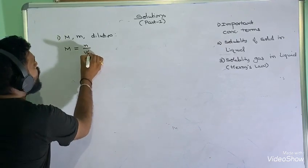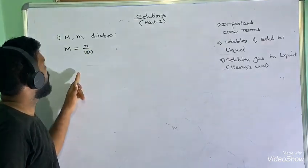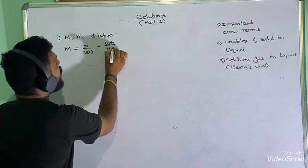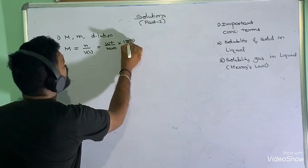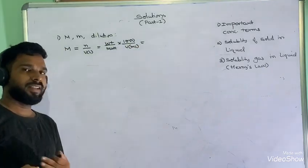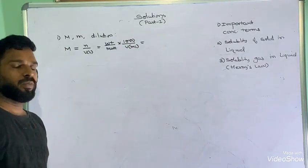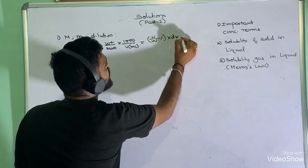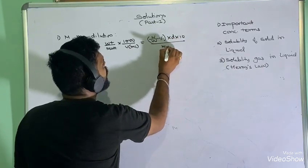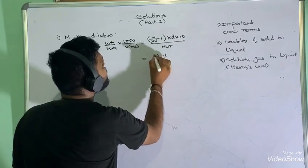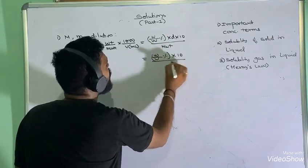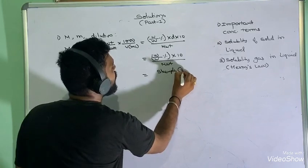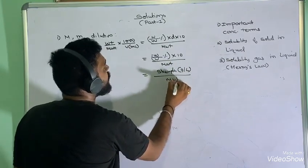For molarity, we have a set of formulas: number of moles divided by volume in liters — that is, the number of moles present in one liter of solution. Or we can use weight divided by molecular weight, multiplied by 1000 divided by volume in mL. If weight by weight percentage is given, multiply by density divided by molecular weight. If weight by volume percentage is given, multiply by 10 divided by molecular weight. If strength is given in grams per liter, divide by molecular weight.